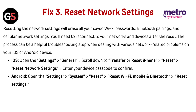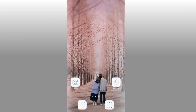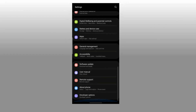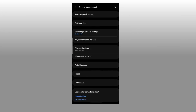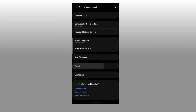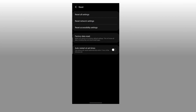On iPhone, open Settings, go to General, scroll down to Transfer or Reset iPhone, then go to Reset, then Reset Network Settings, and enter your device passcode to confirm. On Android, open Settings, go to System, then Reset, then Reset Wi-Fi, Mobile and Bluetooth, and tap Reset Settings.